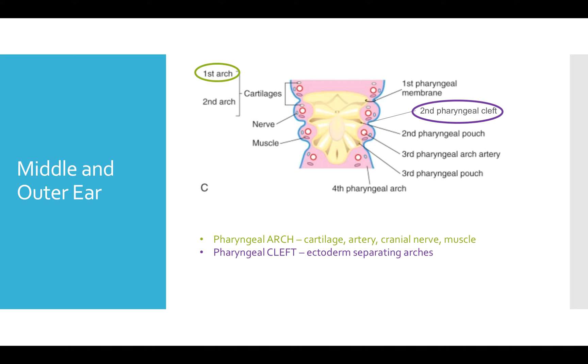The clefts are the ectoderm that separate the arches. The pouches are the endoderm that separate the arches. And the membranes are the endoderm, mesenchyme, and ectoderm that separate the arches.